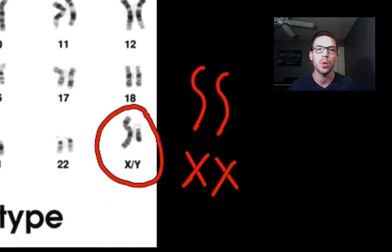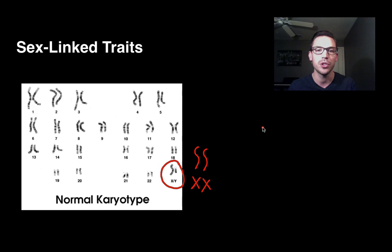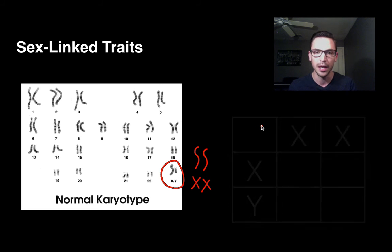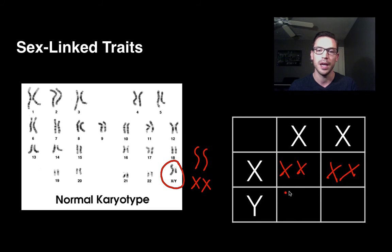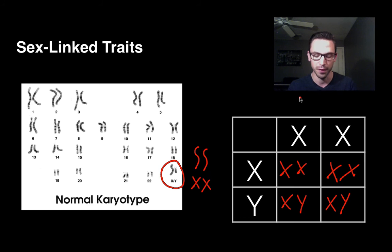This also explains why our population is roughly 50/50 between men and women. In a Punnett square, a female (XX) on top and a male (XY) on the side gives 50% XX offspring (females) and 50% XY offspring (males). Anytime you have a child, it's a 50/50 shot between male and female.